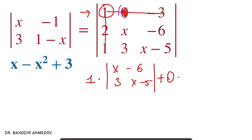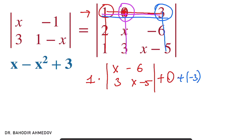The second entry is 0, so we do the same thing with that 0, then with the 3. We choose the 3, eliminate the row and column where the 3 is located. So it's minus 3, multiplied to the determinant of the remaining matrix, which is 2, x, 1, and 3.